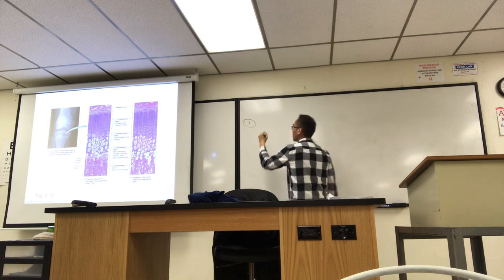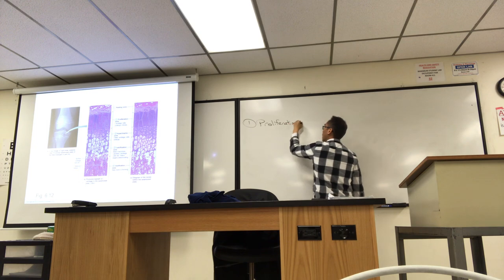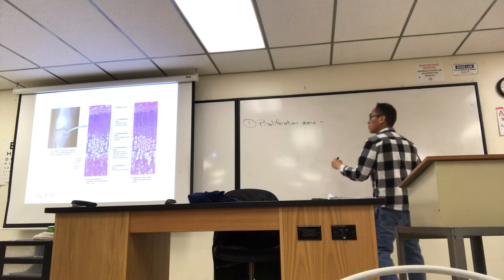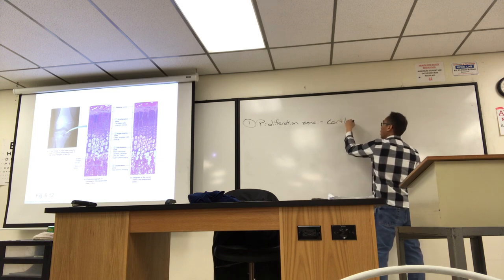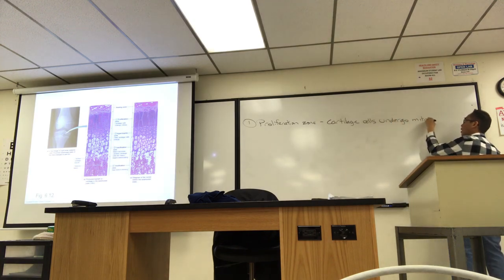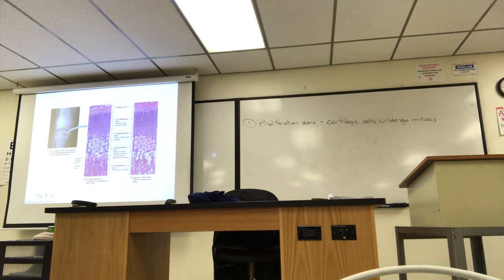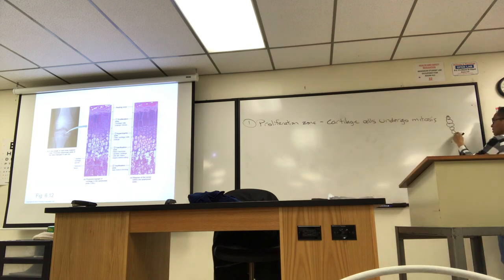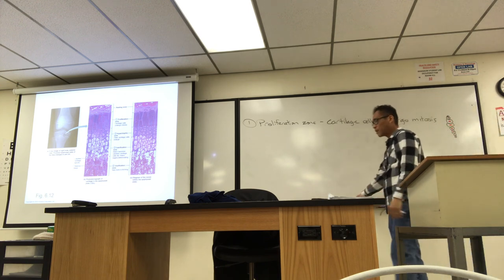That top zone where the cartilage cells are, the proliferation zone. What's proliferating? The cartilage cells. They're undergoing mitosis. So what you want to look for in that top zone, you see these little lacuna. And they've got cells inside of them. Those are the chondrocytes or cartilage cells. They kind of look like that in these vertical rows of cartilage cells. That's what they look like when they've just undergone mitosis. They're rapidly dividing these vertical rows of the chondrocytes.